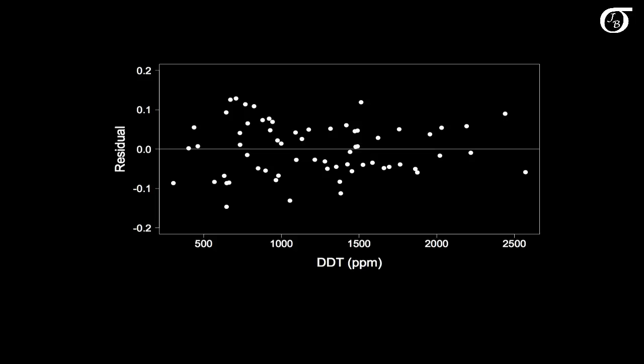What we are hoping to see most of the time in a residual plot such as this is simply a random scattering of points, nothing indicating a problem with our model.